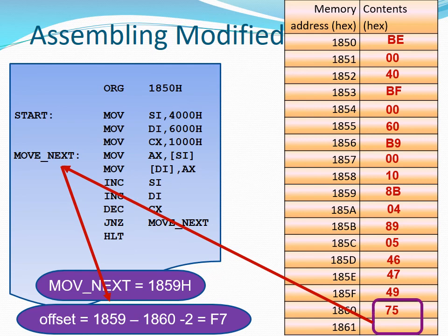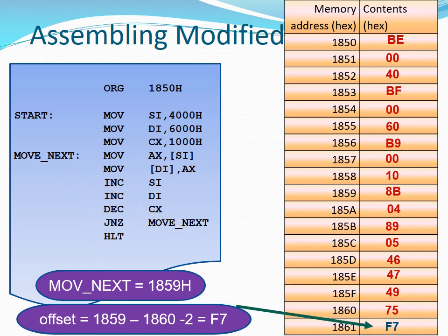The address we want to branch to is 1859H, and the address we are branching from is 1860H. Applying the formula: offset = 1859 − 1860 − 2, which gives us F7. The value is negative because we are branching to a lower address value. We then load F7 into address 1861. So we have finished assembling that program.